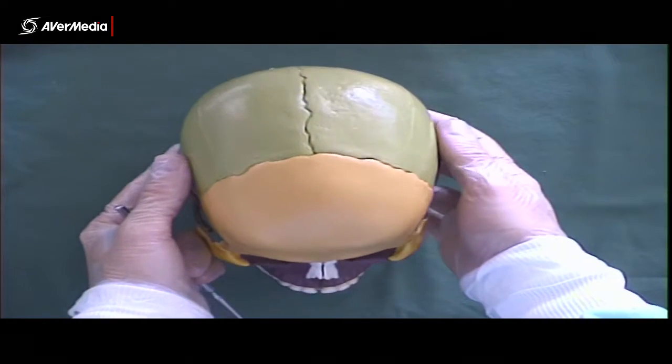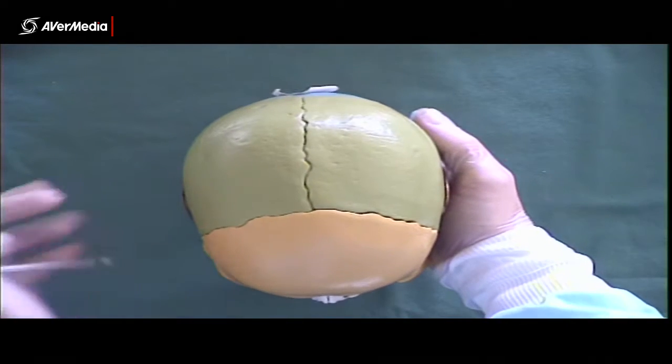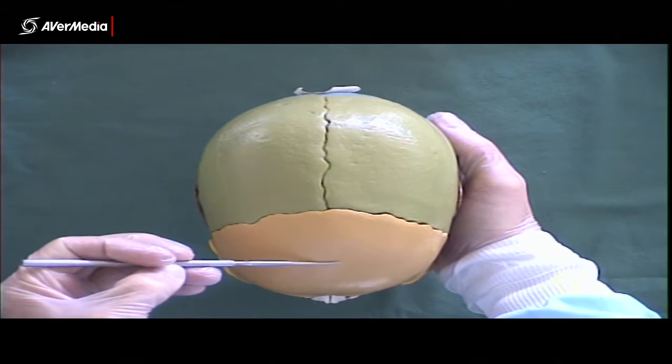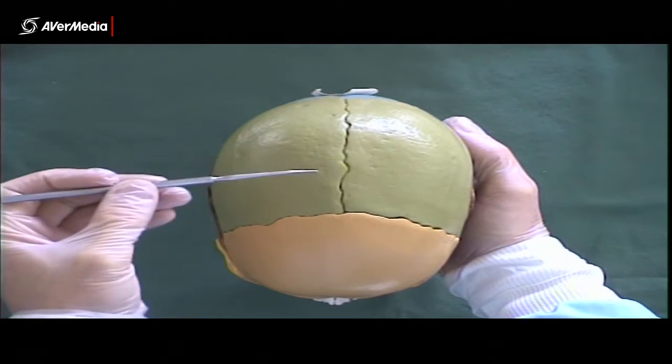Here we're looking at a colored plastic skull from a superior point of view. We can see on the anterior aspect the frontal bone, and just posterior to that, two parietal bones.